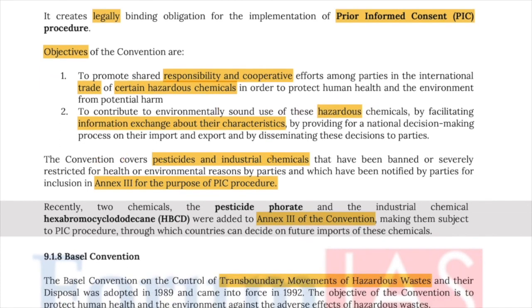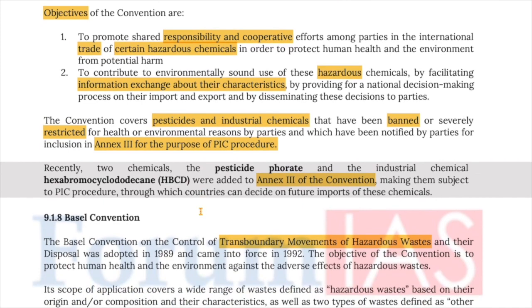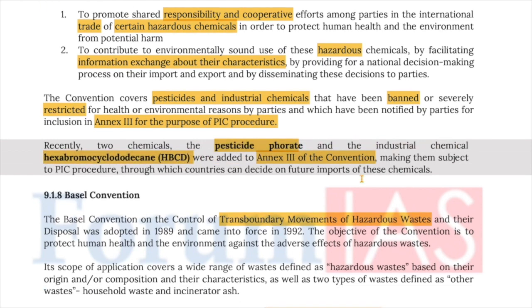The convention covers pesticides and industrial chemicals that have been banned or severely restricted for health or environmental reasons by parties and notified for inclusion in Annex 3 for PIC procedures. Recently, two chemicals — pesticide paraquat and the industrial chemical hexabromocyclododecane — were added to Annex 3, making them subject to PIC procedures.